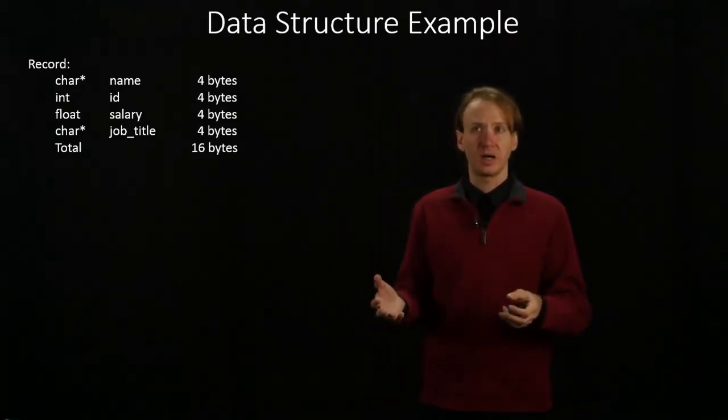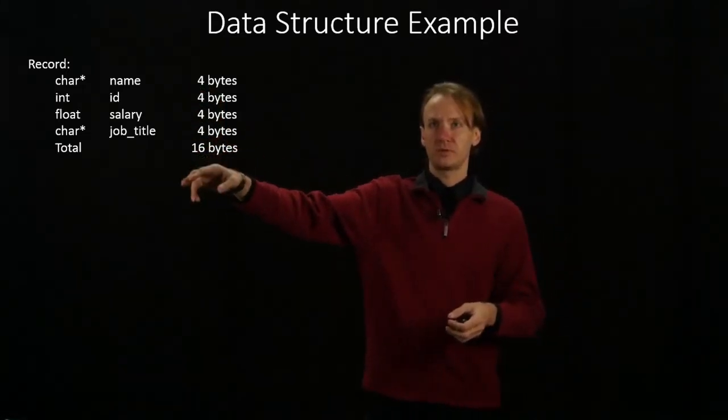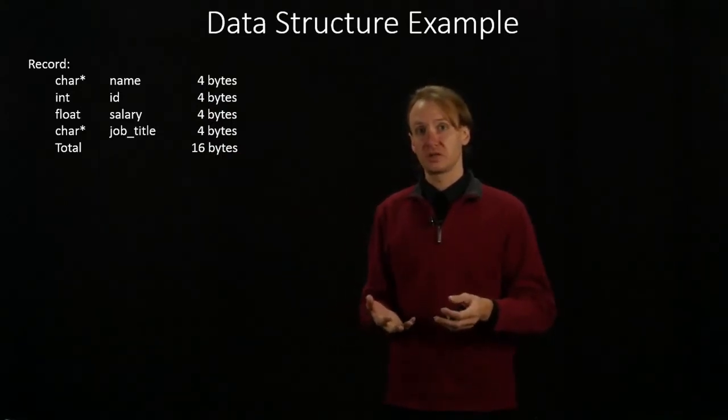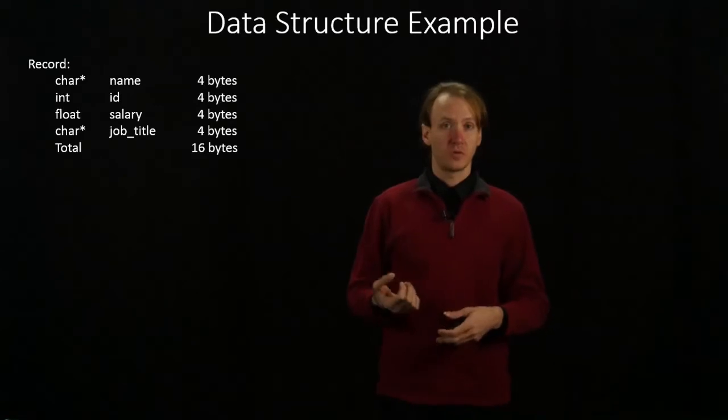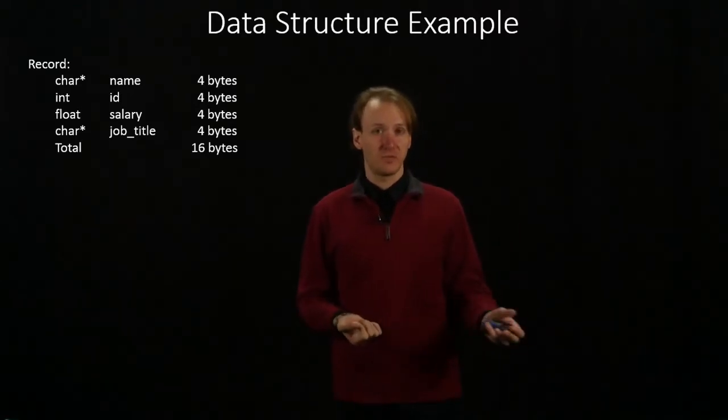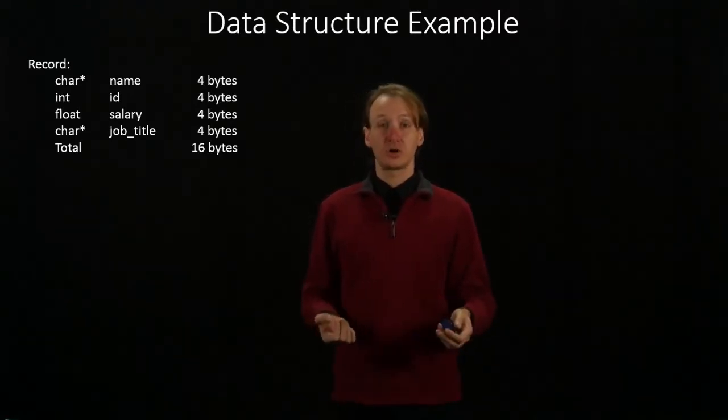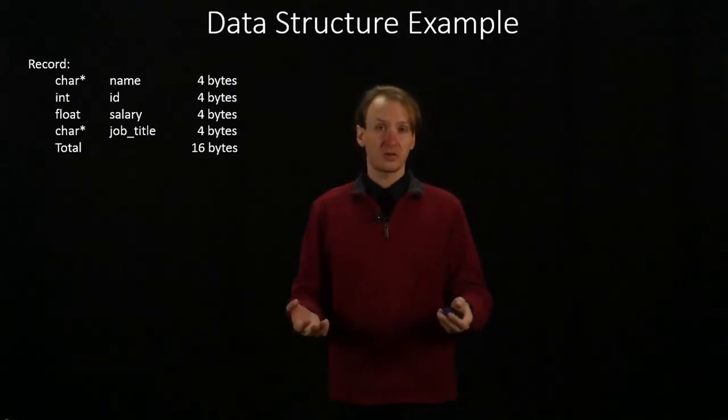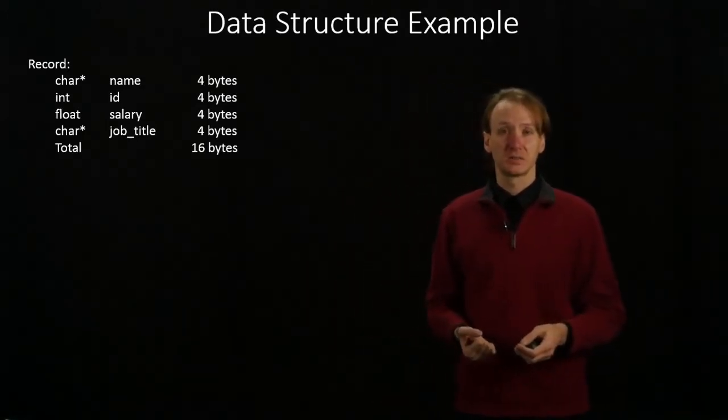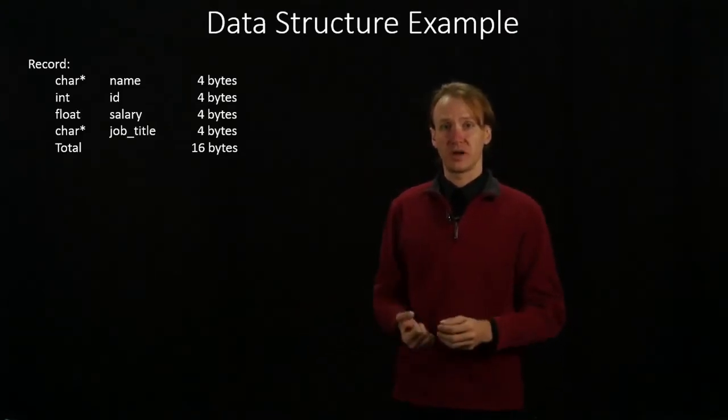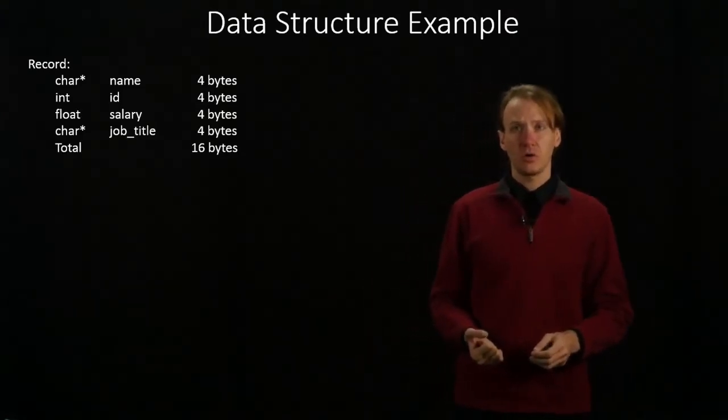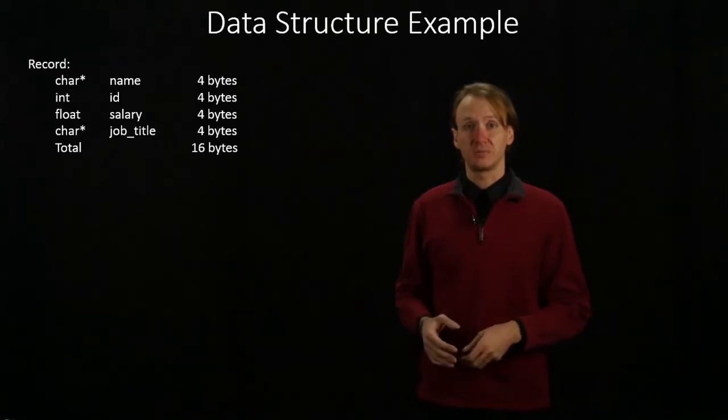So pointers are only 4 bytes, so the name and the job title both end up being just 4 bytes of space. Integers are 4 bytes, so the ID takes up 4 bytes of space. Basic floats are also just 4 bytes, so the salary also takes up 4 bytes of space. So I've got 4 elements, each of which take 4 bytes of space, so total we have 16 bytes of space being used.